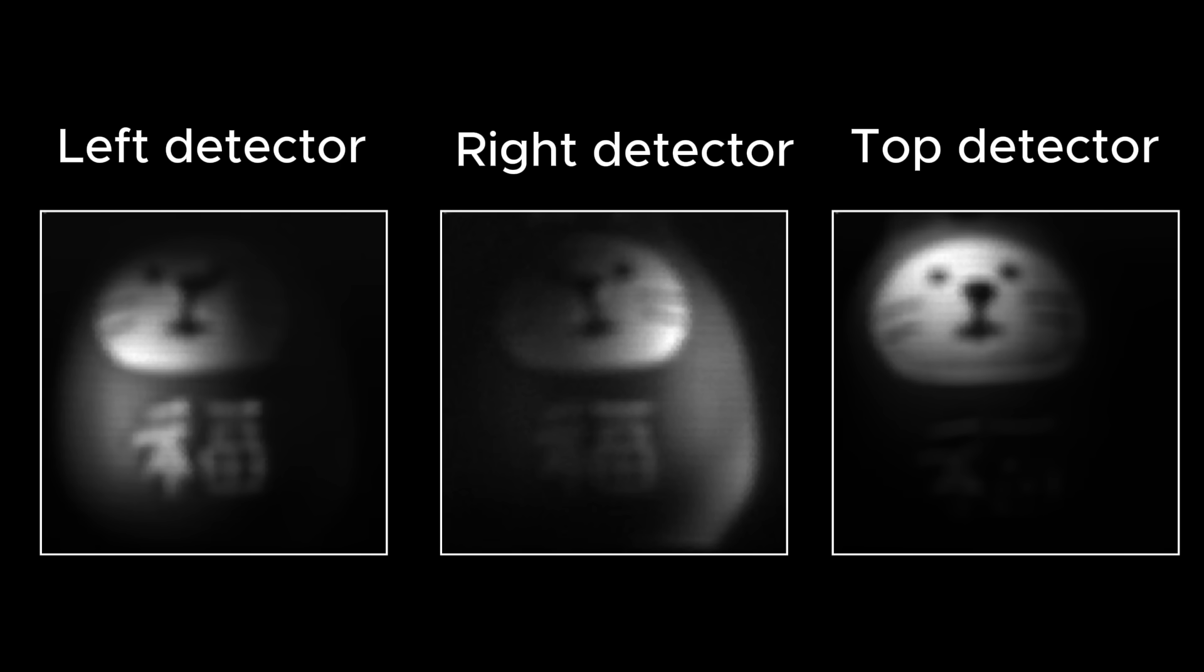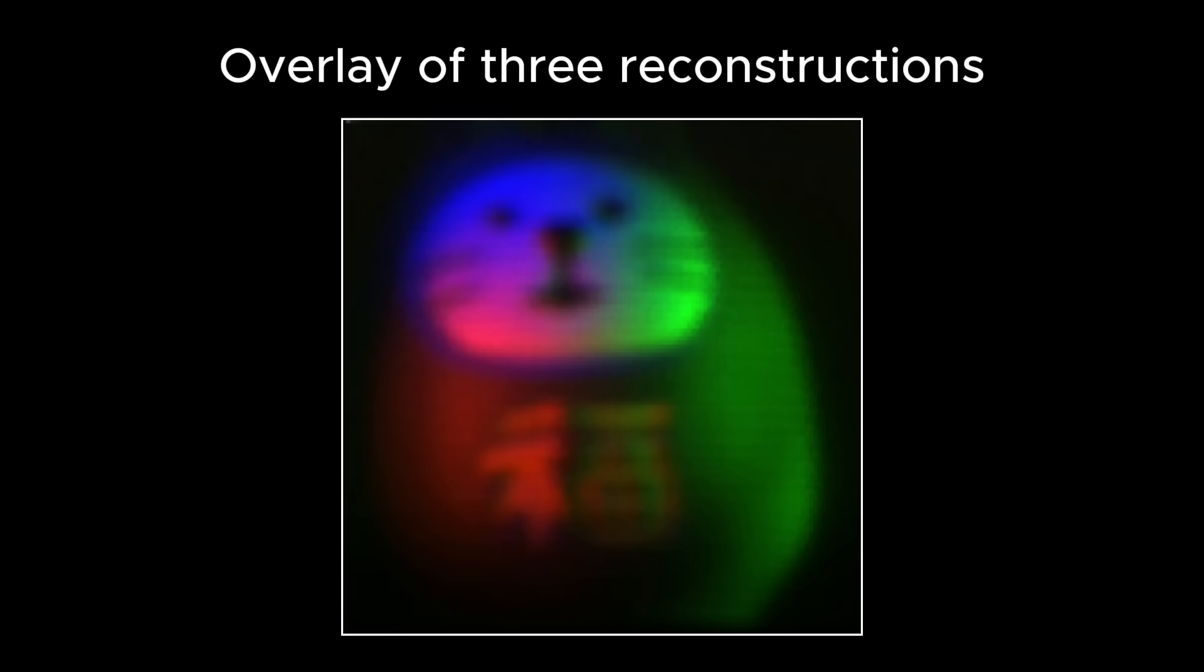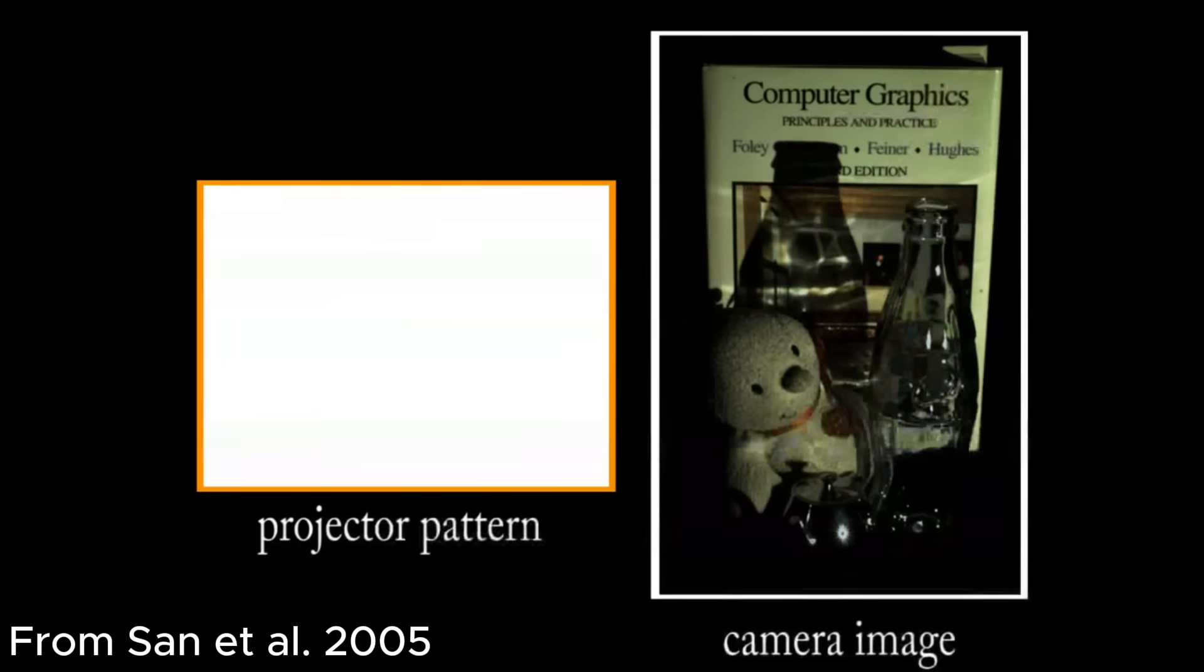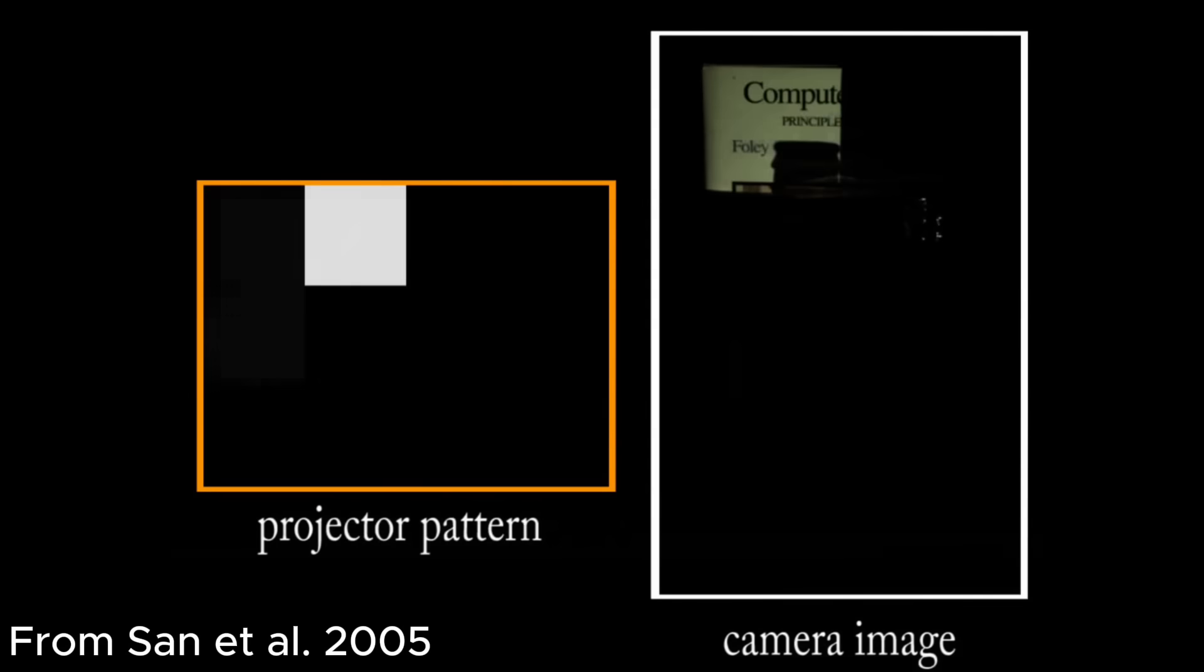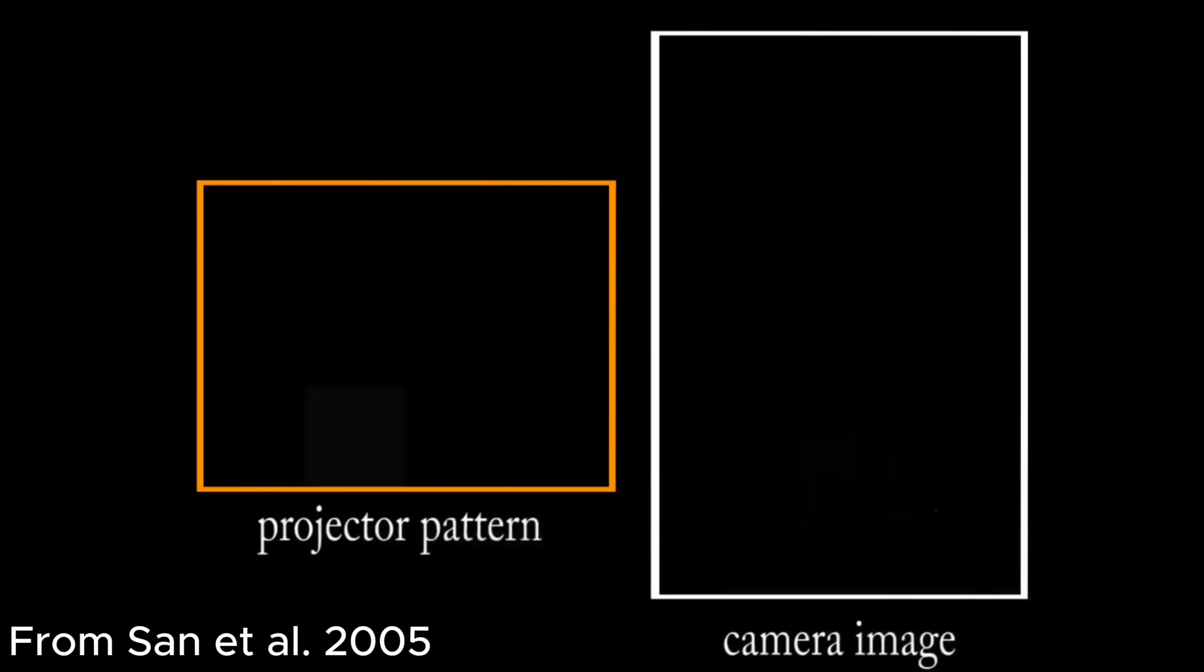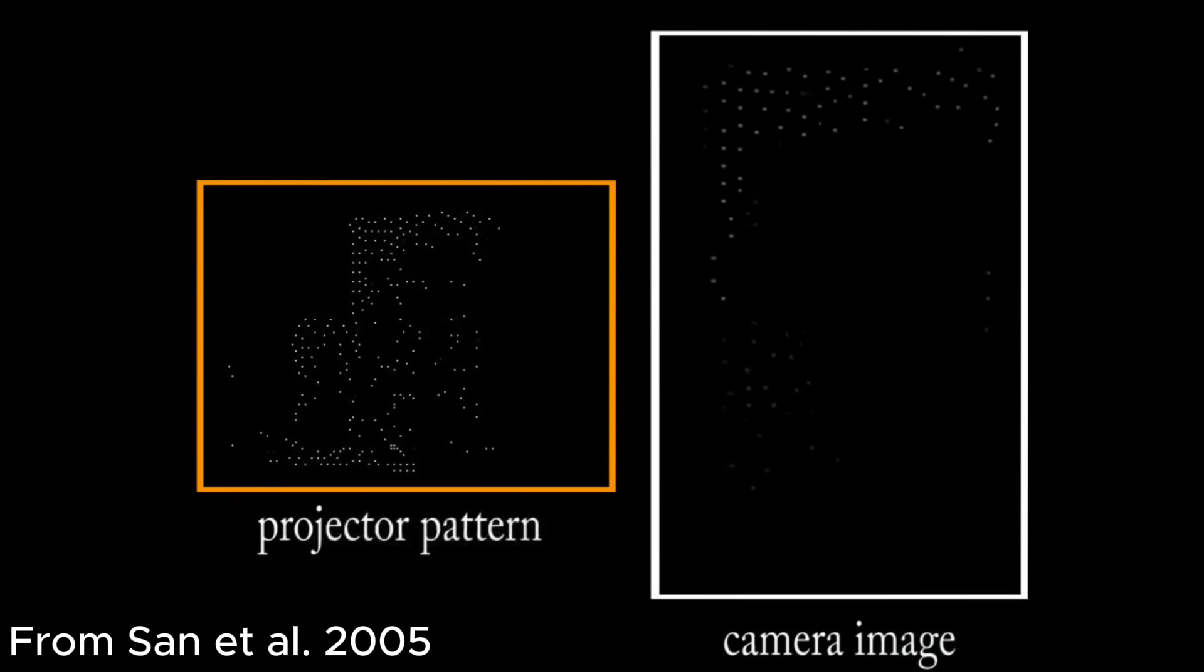If I color code each image and overlay them, you can better visualize how each image has the same perspective with different lighting. This is one of the main concepts in dual photography and Helmholtz reciprocity. Using a structured light source and a detector, we can determine the light transport between them.